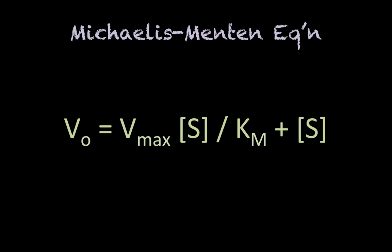Alright, so you should have at least found the Michaelis-Menten equation. And that's the initial velocity is equal to Vmax times substrate concentration all divided by the Michaelis constant plus substrate concentration. So that's the Michaelis-Menten equation.